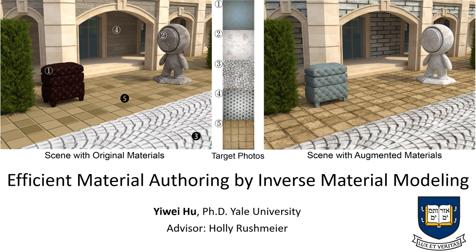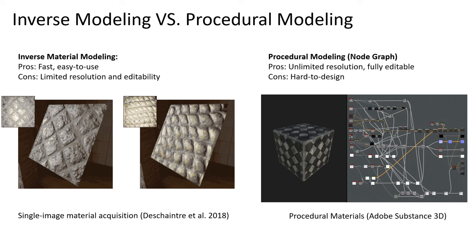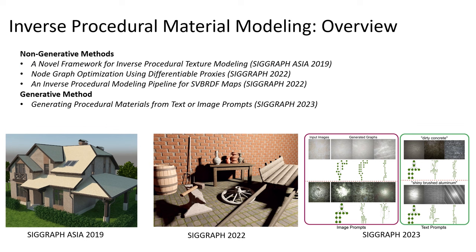Hi, I'm Yi Wei. My thesis focuses on efficient material authoring by inverse material modeling. Creating high-quality digital material is a hard problem. Inverse material acquisition methods recover material properties from photos. Although it's fast and easy to use, the materials usually have limited resolution and editability. On the other hand, procedural materials have unlimited resolution and easy to edit. However, it's much harder to design. In my thesis, I combined both methods to get the best solution. Given an image or text prompt, can we generate a procedural material graph? To solve this problem, we start from addressing a simpler one using non-generative methods, and later we move to a generative model to learn how to build graphs.